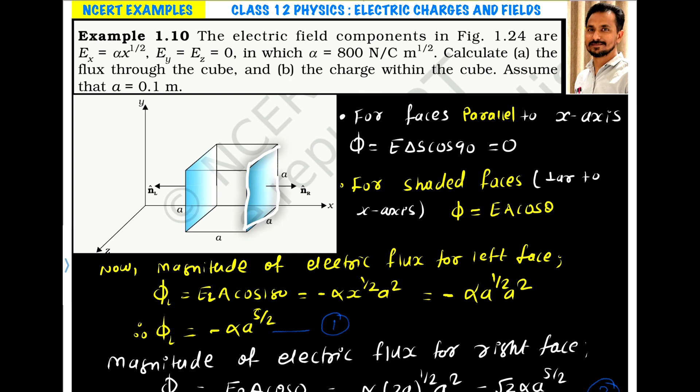If we see this right face, its area vector is pointing outward, so it is parallel to x axis. Similarly, the left face of the cube has its area vector pointing towards left side, meaning it is anti-parallel to the electric field. So the flux will only produce through left and right faces.